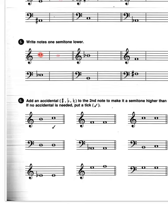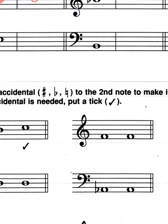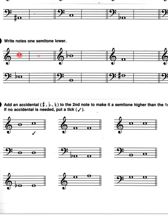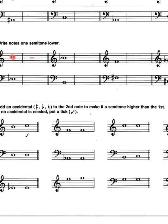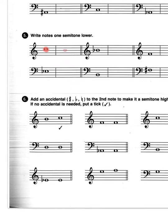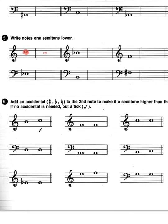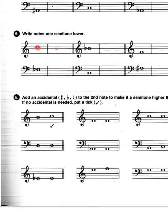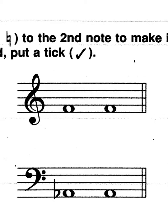Question number six. Add an accidental - sharp, flat or natural - to the second note to make it a semitone higher than the first. If no accidental is needed, put a tick. So let's have a look here. They want the second note to be a semitone higher. So these are two Fs, so of course they are the same. So to make the second note higher, we need to add a sharp.